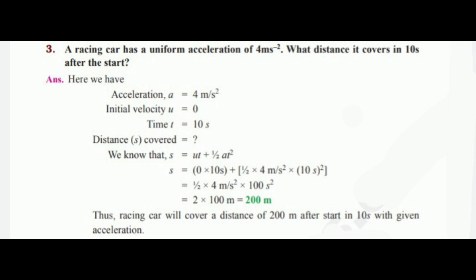Next problem: A racing car has a uniform acceleration of 4 m/s². What distance does it cover in 10 seconds after the start? Here: a = 4 m/s², initial velocity u = 0, time t = 10 s. Using s = ut + ½at²: s = (0 × 10) + (½ × 4 × 10²) = ½ × 4 × 100 = 200 m. Thus the racing car will cover a distance of 200 m after the start in 10 seconds.